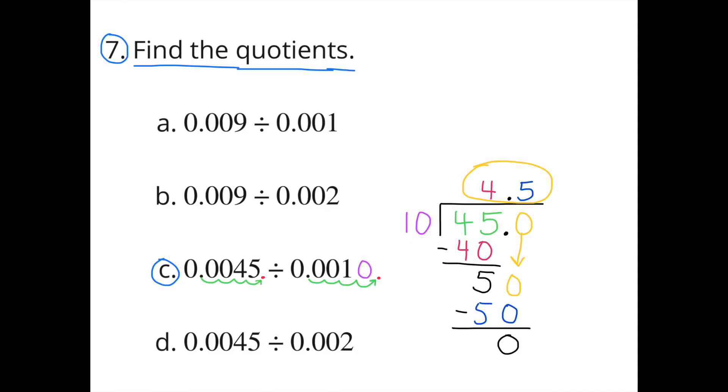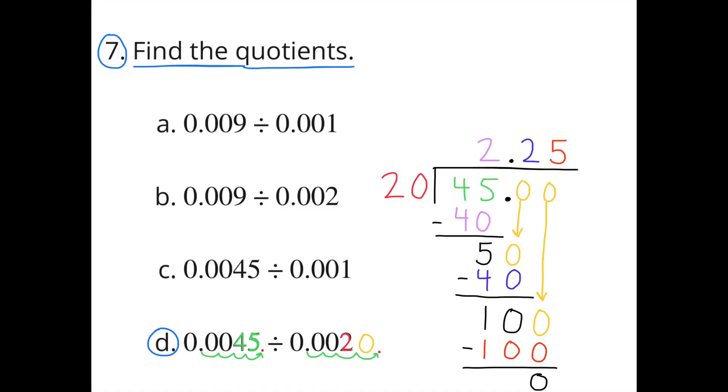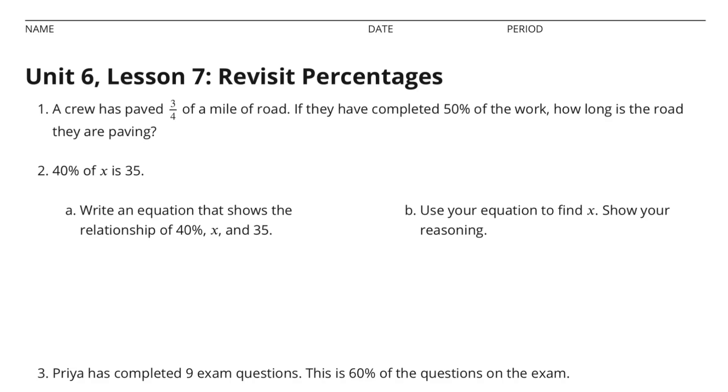Part C: 45 ten thousandths divided by 1 thousandth. This time I needed to make the 45 ten thousandths ten thousand times bigger, so I moved the decimal four places to the right. I had to do that to the 1 thousandth also, placing a zero as a placeholder so that 1 thousandth would become 10. And 45 divided by 10 is 4 and 5 tenths. Part D: 45 ten thousandths divided by 2 thousandths. I had to make the 45 ten thousandths ten thousand times bigger to equal 45. Therefore, I needed to make the 2 thousandths ten thousand times bigger also, making it worth 20. And 45 divided by 20 is 2 and 25 hundredths.